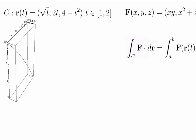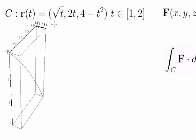Our curve C is given by the parameterization r(t) equals (√t, 2t, 4 - t²) as the parameter t runs from 1 to 2. This curve is pictured here.